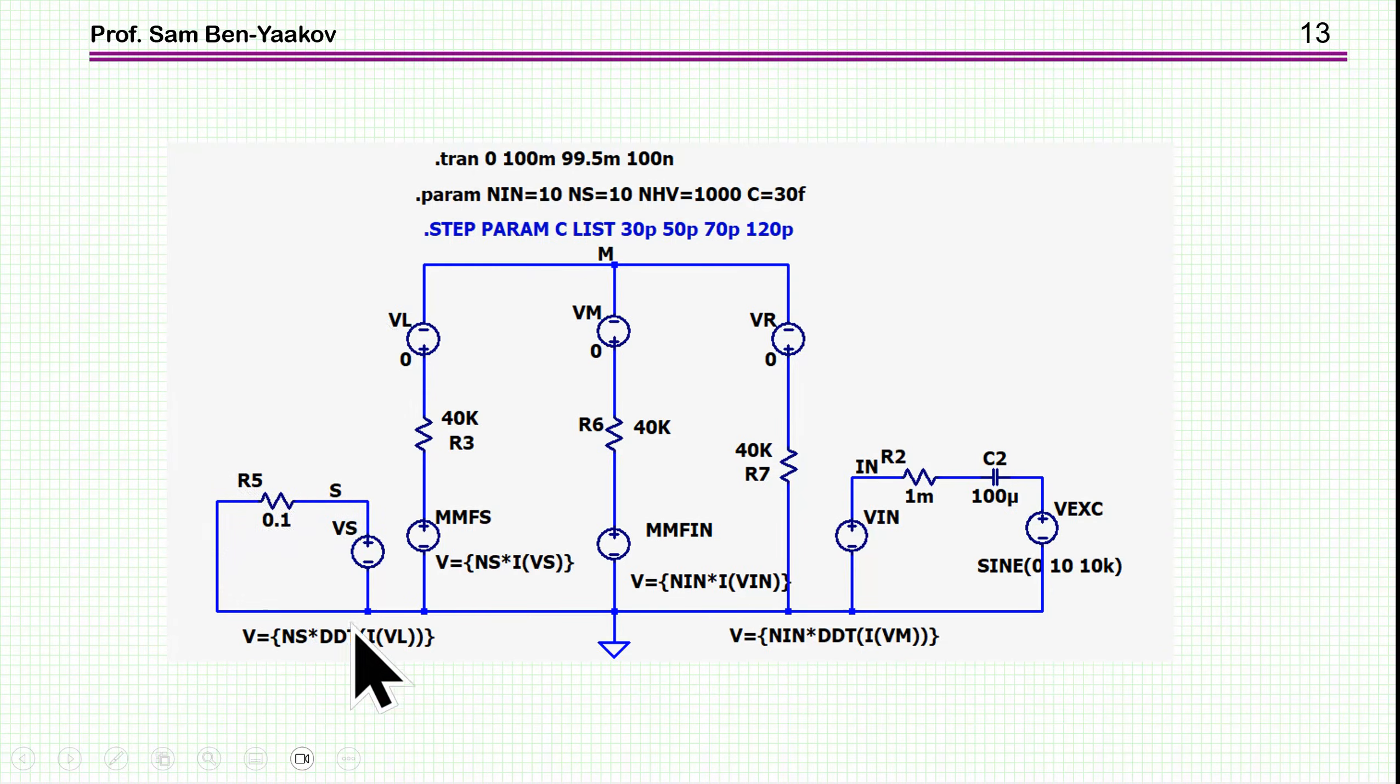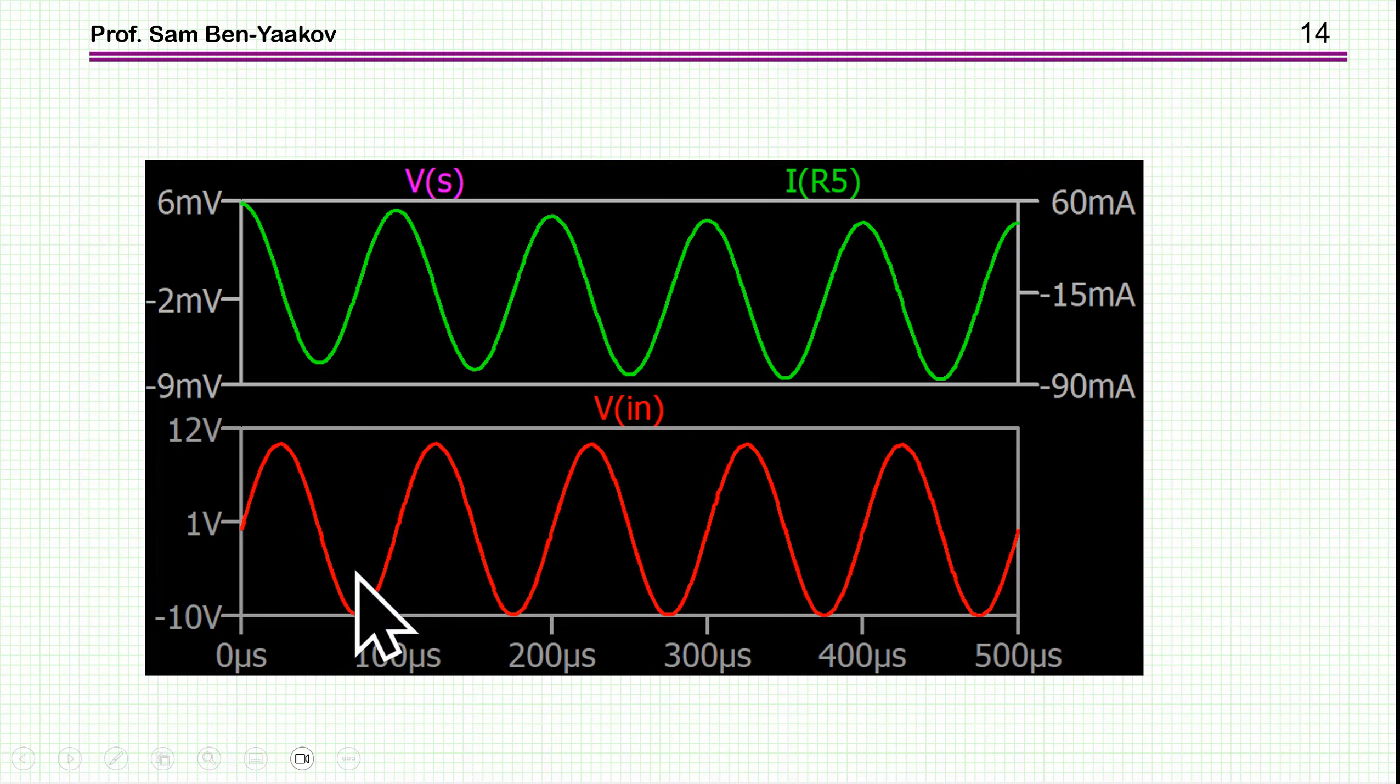Now, I'm shorting this auxiliary winding. And we would expect to have a lower voltage. And lo and behold, that's exactly what we have. Again, the input is 10 volt. And now the output, that is the voltage across the auxiliary switch, is only 6 millivolt. This is before the resistor. And then the current, accordingly, is 60 milliamp. So the short here does not cause a high current, but rather a low voltage and a low current. This is kind of a unique feature of this bypass of magnetic bypass.